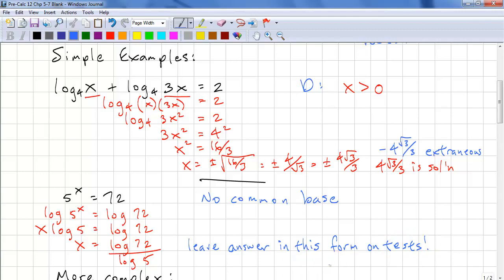So x = log(72)/log(5). And since this is math, we leave the answer in this form because it is an exact value. If you change it to a decimal, it's not an exact value, so it's not as good of an answer.